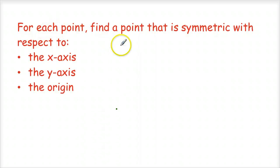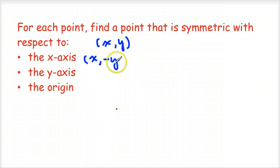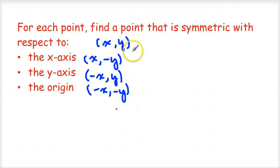So those are the three scenarios for symmetry. Given a point (x, y): if a graph is symmetric to the x-axis, the y-coordinate flips; if symmetric to the y-axis, the x-coordinate flips; and if symmetric to the origin, both coordinates change to their opposites.